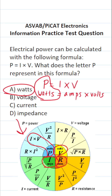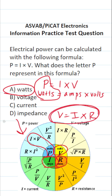Beyond that, one of the most common formulas you need to know is Ohm's Law, which says that volts is equal to amps times resistance. Definitely commit this formula to memory, and if you look on my channel, you'll see plenty of examples where I use that formula to make calculations.